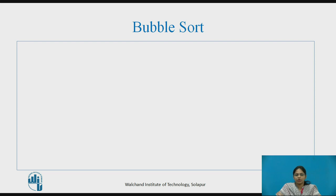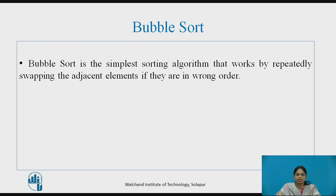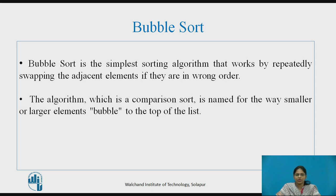Let us see what bubble sort is. Bubble sort is the simplest sorting algorithm that works by repeatedly swapping the adjacent elements if they are in the wrong order. The algorithm, which is a comparison sort, is named for the way smaller or larger elements bubble to the top of the list.